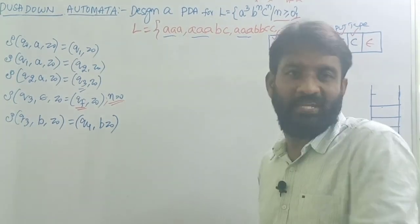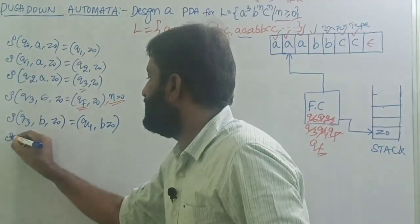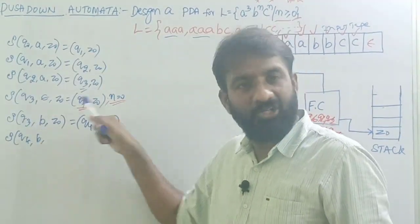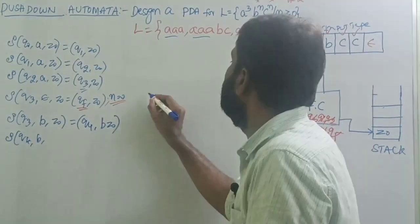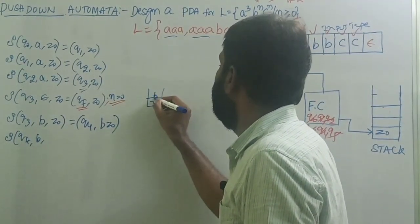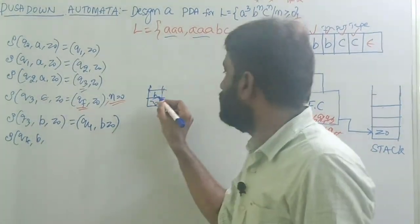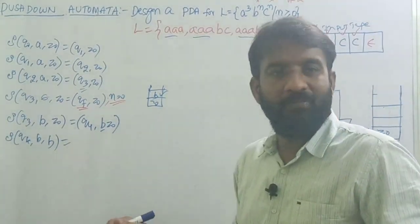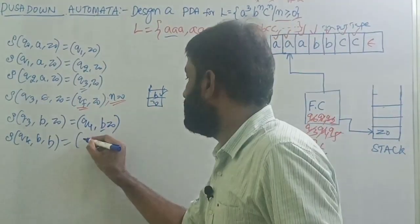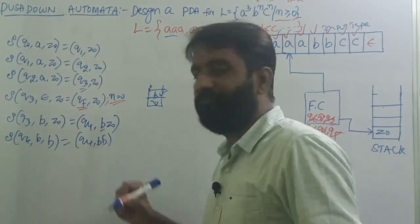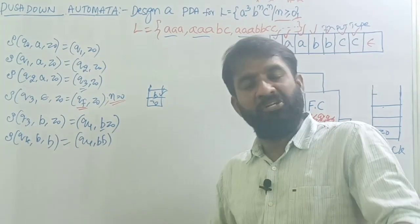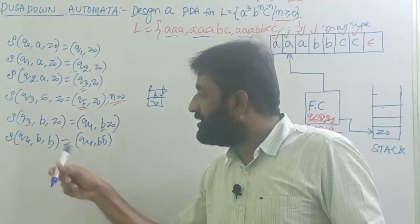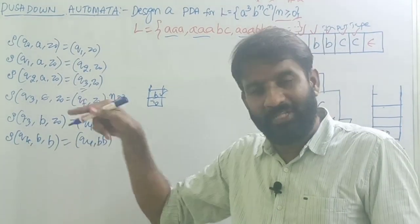On state Q4, if there is one more B, the top of the stack is already B from before. Transition: Q4, B, B — add B onto the stack, remain on the same state Q4, result B B. If there are 10 B's or 20 B's, read all B's on the same Q4 state only. This acts as a self-loop in the graphical notation.